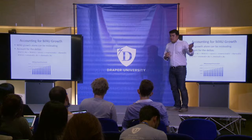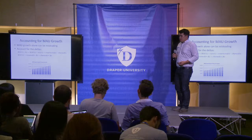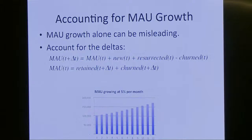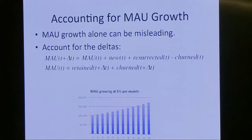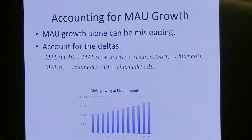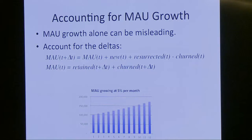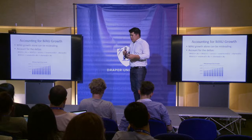So here's a concept: accounting for MAU growth. MAU here is monthly active users. The graph on the bottom is an example of a company whose MAU is growing at 5% per month — looks great, right? Now, that's something a company could come in and show us and say, 'Oh look, we're growing super fast.' We actually developed a framework at Facebook to break down this growth so we can understand the components of it, because this top-line figure can be hiding all sorts of stuff underneath.